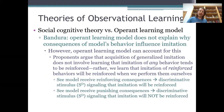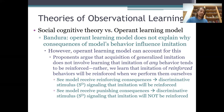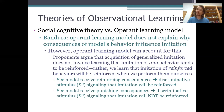The operant learning viewpoint can explain vicarious reinforcement and vicarious punishment by incorporating the consequences of the model's behavior as part of the discriminative stimulus. So if you see a model getting reinforced, that's a cue that doing the same thing yourself will probably get reinforced too. And if you see a model getting punished, that's a discriminative stimulus signaling that doing the same thing yourself will probably also get punished.